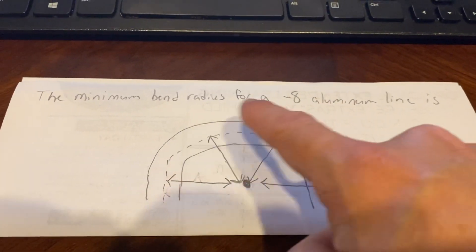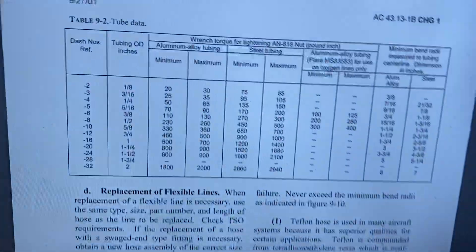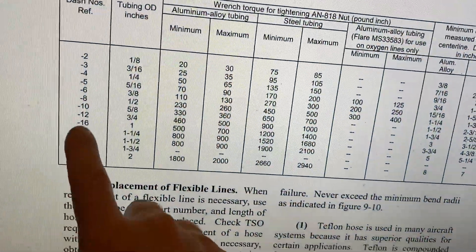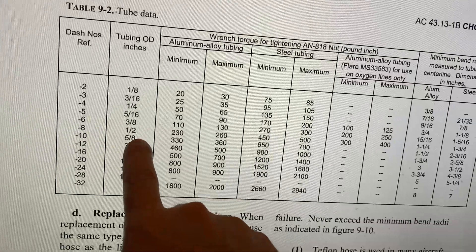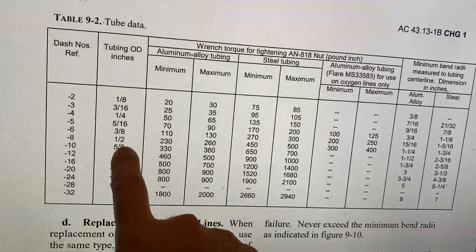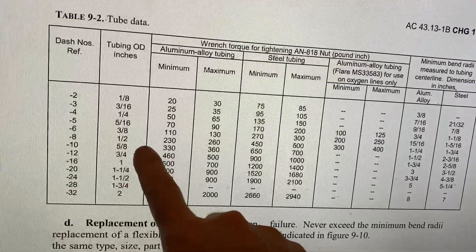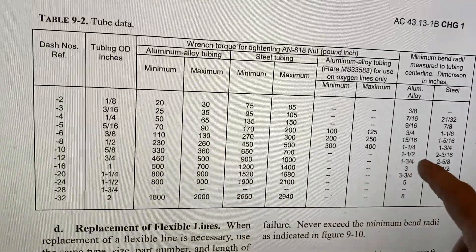So it says a dash 8 aluminum line. So how to read this chart, all you'd have to do is find the dash 8. Now, instead of using dash 8, I could have told you it was a half inch line or a 0.5 inch line. A lot of ways I could have described that. But you're going to go past the torque and go all the way to the end.